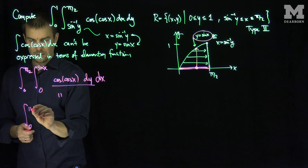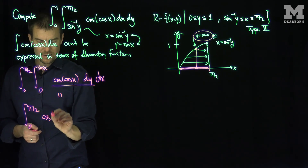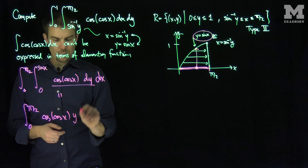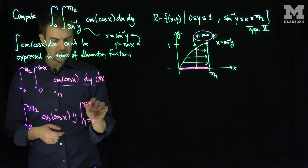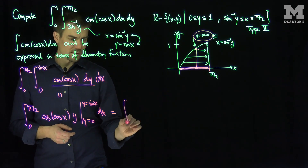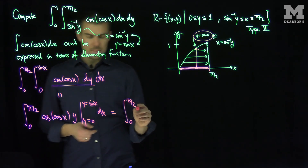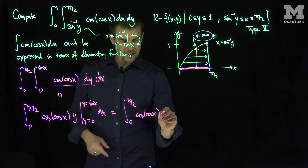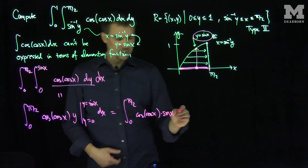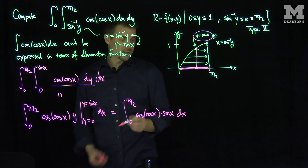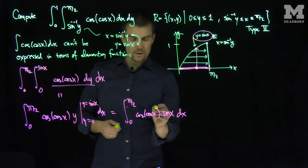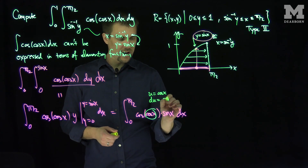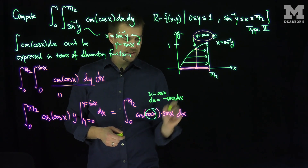This is the integral from 0 to pi over 2 of cosine of cosine of x, times y, where y goes between 0 and sine of x, dx. Plugging in, when y equals sine of x we get cosine of cosine of x times sine of x, and when y equals 0 there's nothing. So now my integral becomes the integral from 0 to pi over 2 of cosine of cosine of x times sine of x dx.